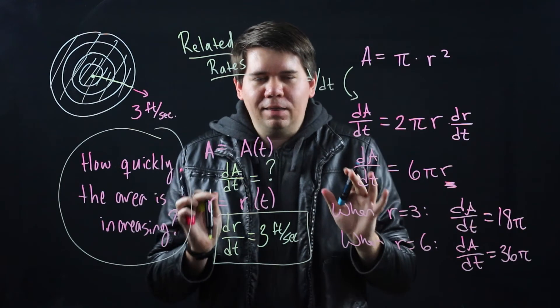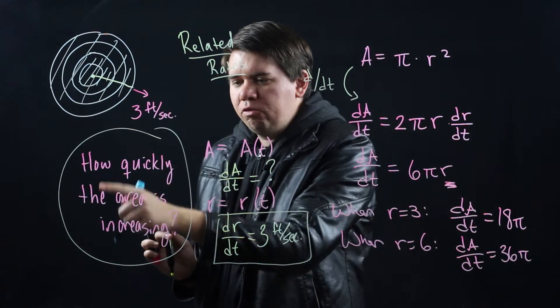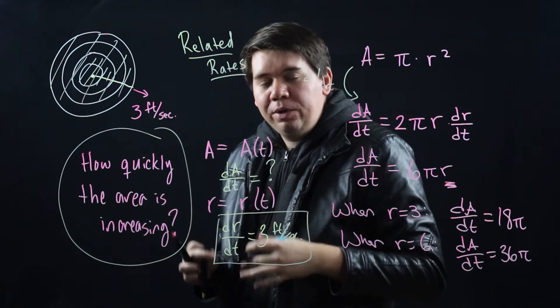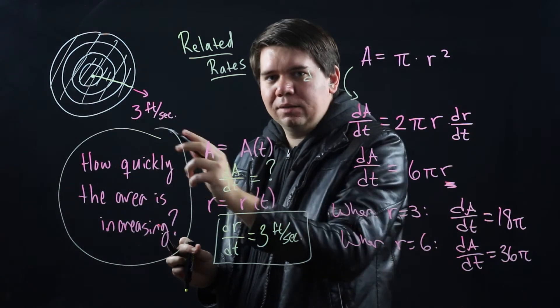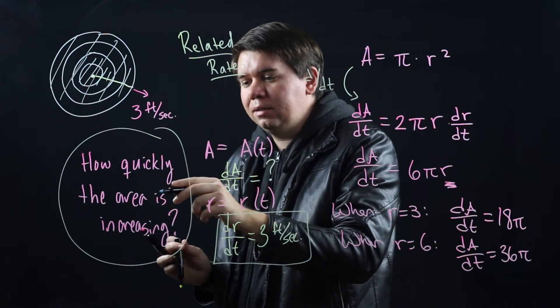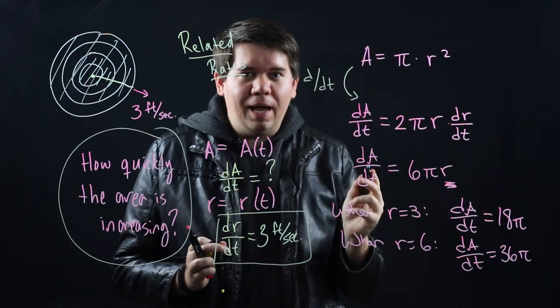Okay, let's step back and think about what we just did. We were asked some question about a rate of change, how quickly is the area increasing. We were given some information about another rate of change, how quickly the radius was changing. Since we were given information about the radius and the area, we found a formula to relate those two values.